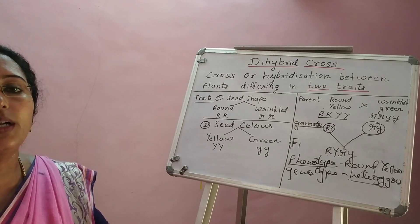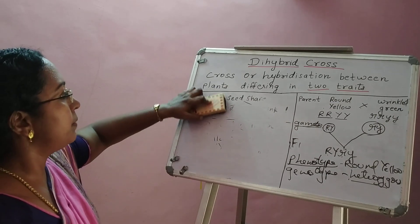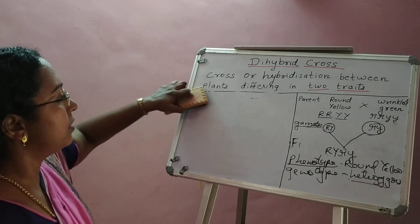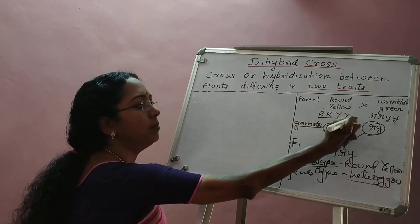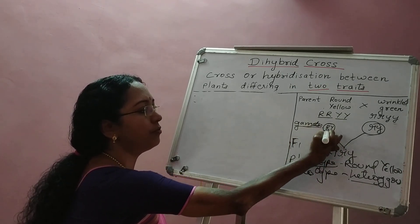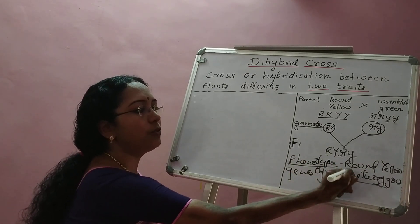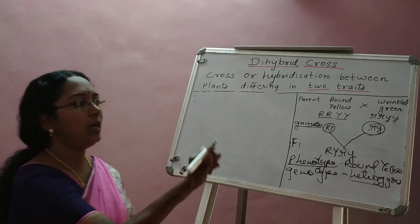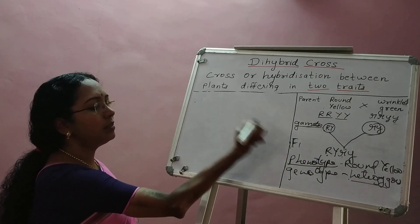Now after F1, as in the monohybrid cross, the next step is self-hybridization of F1. So the true breeding parents were crossed to get F1 — heterozygous round yellow plants. Now we do self-hybridization of F1.